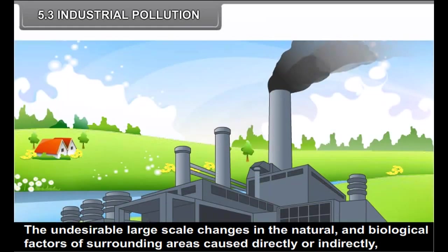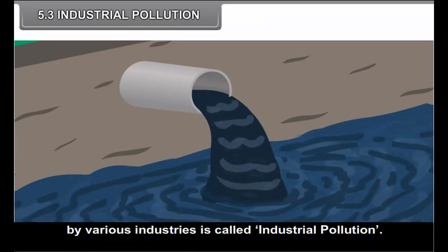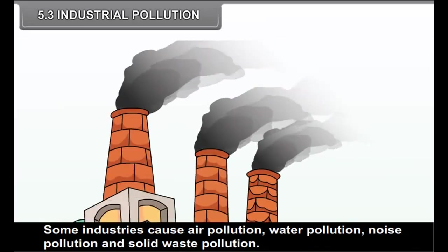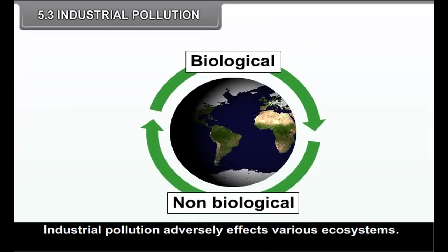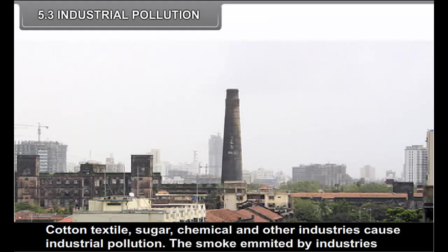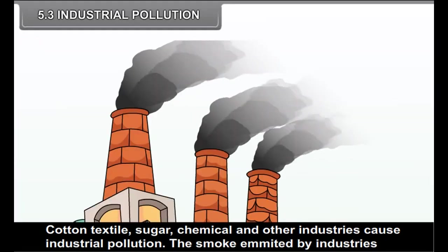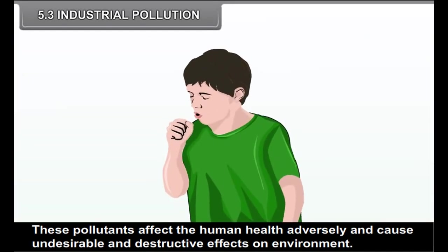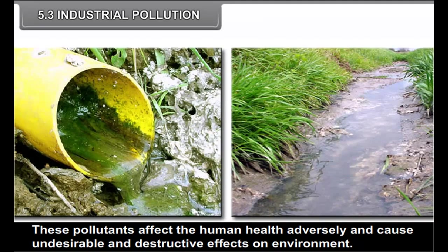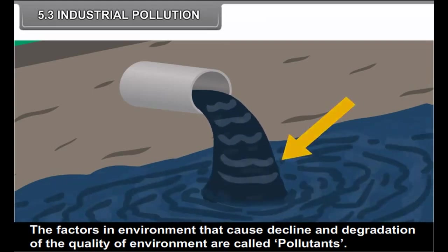Industrial pollution refers to the undesirable large-scale changes in the natural and biological factors of surrounding areas caused directly or indirectly by various industries. Some industries cause air pollution, water pollution, noise pollution and solid waste pollution, and industrial pollution adversely affects various ecosystems. Cotton textile, sugar, chemical and other industries cause industrial pollution. The smoke emitted by industries, water and solid waste contain pollutants which affect human health adversely and cause undesirable and destructive effects on the environment. Factors in the environment that cause decline and degradation of the quality of environment are called pollutants.